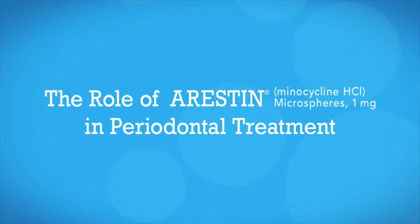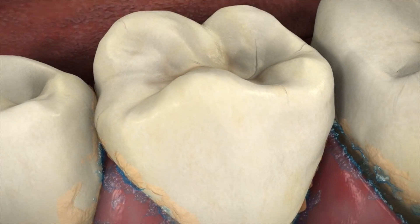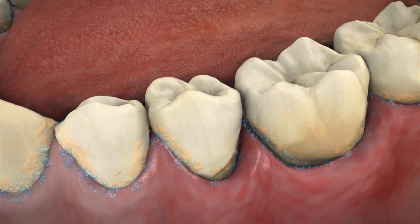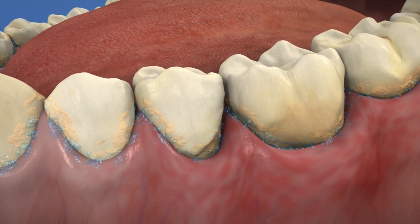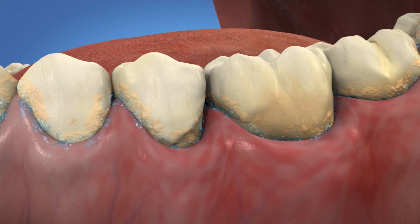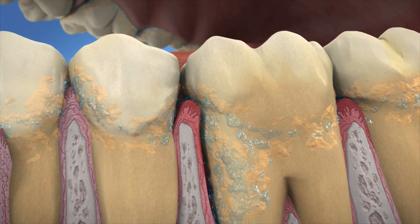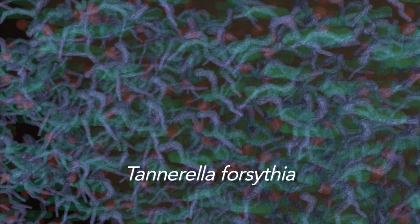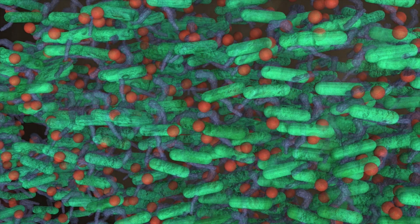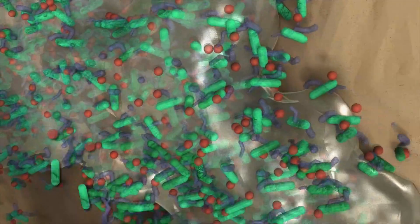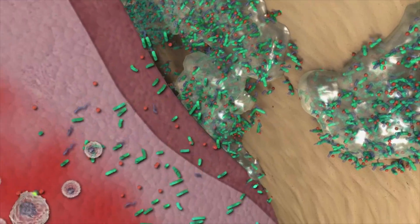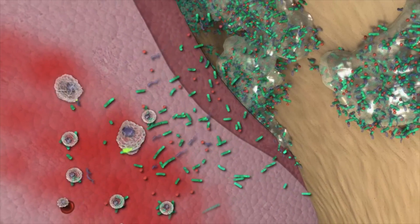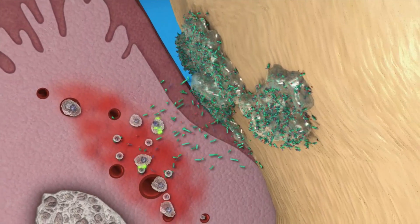For millions of adult Americans, periodontitis is a progressive and chronic disease. The disease begins with an unhealthy balance of bacteria that colonize within dental biofilm. The most prominent periodontal pathogens are P. gingivalis, T. denticola, and T. forsythia, collectively known as red complex bacteria. Research suggests some periodontal pathogens may corrupt the normal immune response, helping harmful bacteria survive and multiply, and the infection to persist and even worsen.